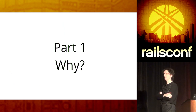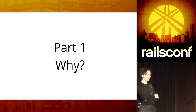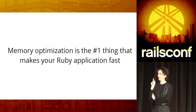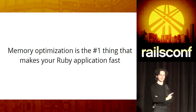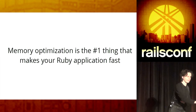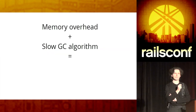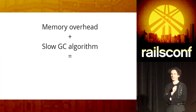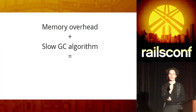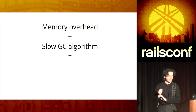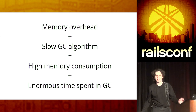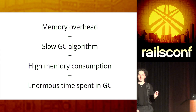Why am I talking so much about memory consumption? The reason is simple. I do believe that memory optimization is the number one thing that you should do to make your application fast. Why? It's because Ruby adds a huge memory overhead, because every object allocates extra 40 bytes in memory, and this gets combined with a slow garbage collection algorithm. What you get as a result is high memory consumption. And what does high memory consumption mean? It means that garbage collection needs to spend more and more time.